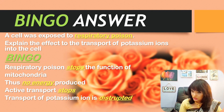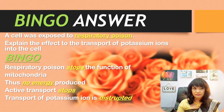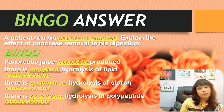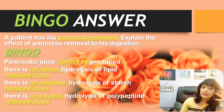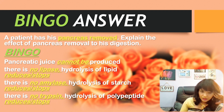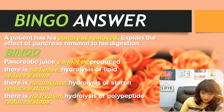Now let's analyze what happened to the patient who had his pancreas removed. The bingo answer is: pancreatic juice cannot be produced; there is no lipase, so hydrolysis of lipid reduces or stops; there is no amylase, so hydrolysis of starch reduces or stops; there is no trypsin, so hydrolysis of polypeptide reduces or stops. Again, negativity is dealt with negativity.